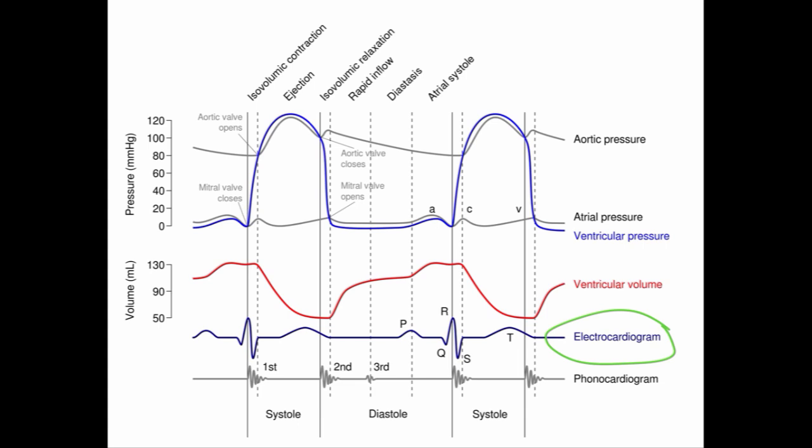The other curve I want to point out — and we're not going to talk much about it other than just for you to look at — is the ventricular volumes. Here, what you want to look at is basically the change in volume in the left ventricle with respect to the timing of the QRS complex.